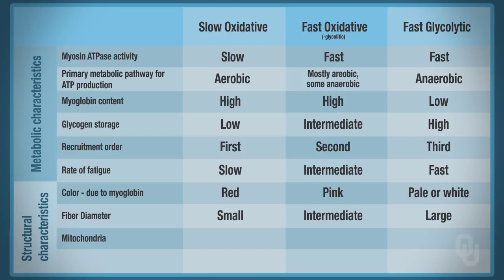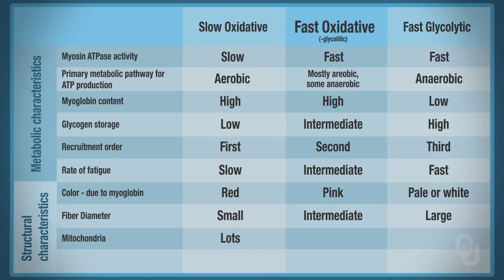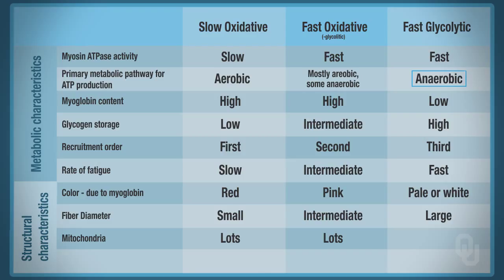Mitochondria are where we perform oxidative phosphorylation — taking oxygen, doing electron transport, chemiosmotic coupling, and aerobic respiration. So slow oxidative fibers have lots of mitochondria. The same is true for fast oxidative because we're doing mostly aerobic respiration. Because fast glycolytic only does anaerobic respiration, it has very few mitochondria.